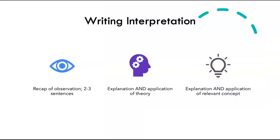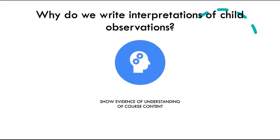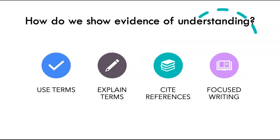When you're writing your interpretation, you want to make sure that you quickly recap the observation in two to three sentences, and that your focus is on explaining and applying the theory — in this case, Parten's types of play — and explaining and applying a relevant concept — in this case, reenacting life in play themes — all for the goal of showing your evidence of understanding of course content. The way that you show evidence of understanding is by using terms, explaining the terms, citing your references, and focusing your writing on the writing prompt.